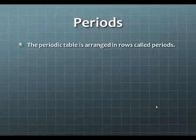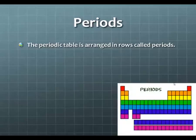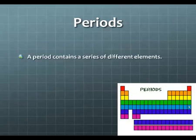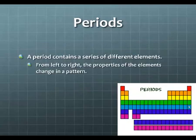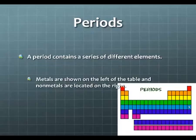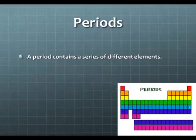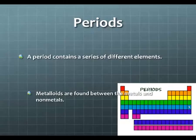Periods. The periodic table is arranged in rows called periods. So we can see here, inside of this picture, there's one period, two, three, four, five, and so on. Inside of your notes, I want you to color each period the same color. A period contains a series of different elements. From left to right, the properties of the elements change in a pattern. Metals are shown on the left of the table, and nonmetals are located on the right. Metalloids are found between the metals and the nonmetals.